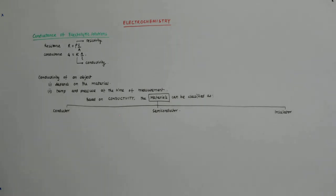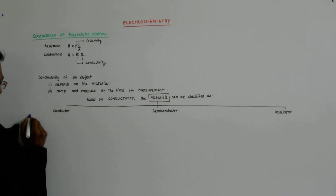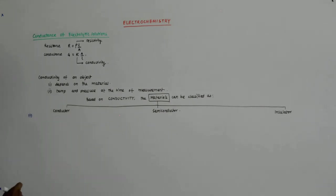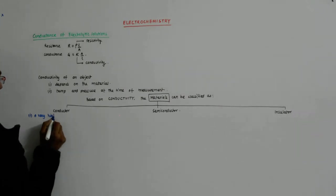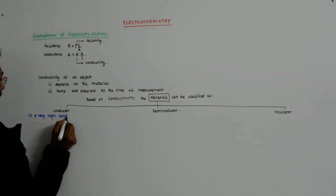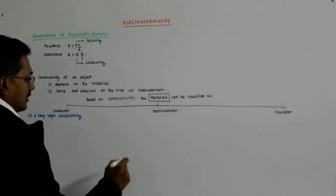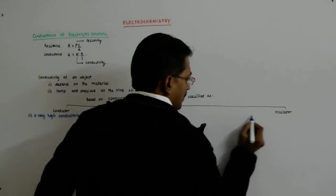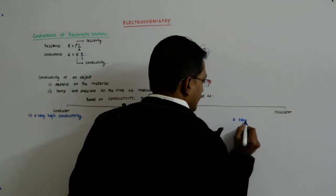Now what is the distinction between them? A conductor is characterized by a very high conductivity. An insulator is characterized by a very low conductivity.